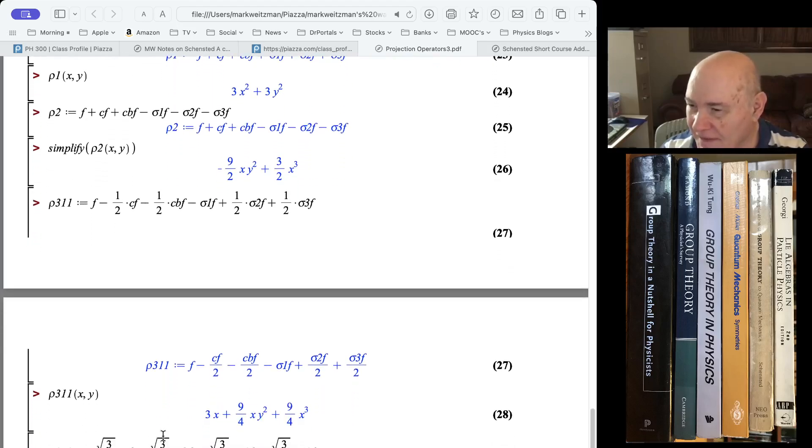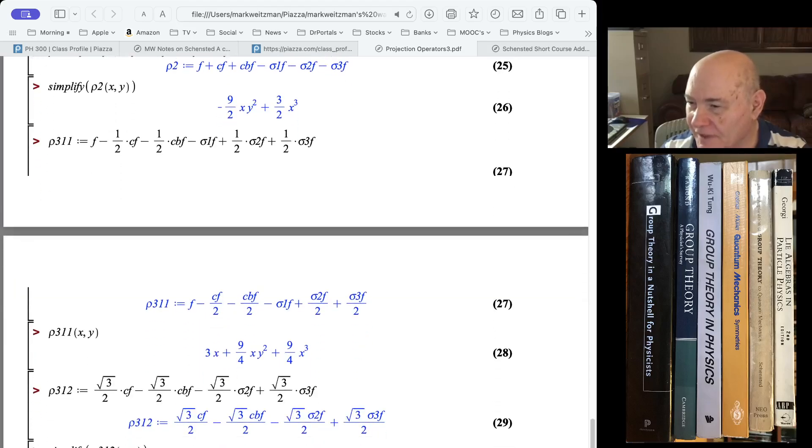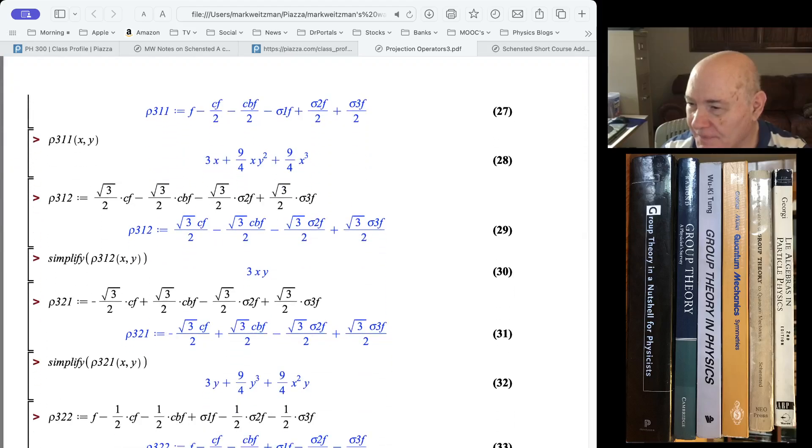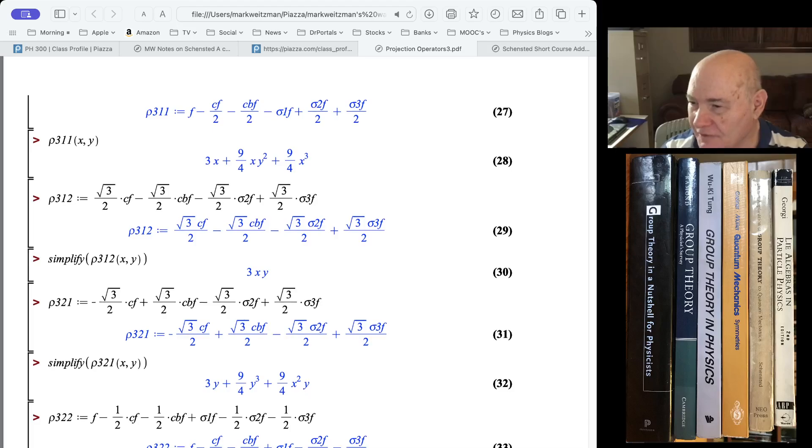The first number here is 3 corresponding to the order. This is the three-dimensional representation, gamma 3. It's actually a two-dimensional representation. Here it is.